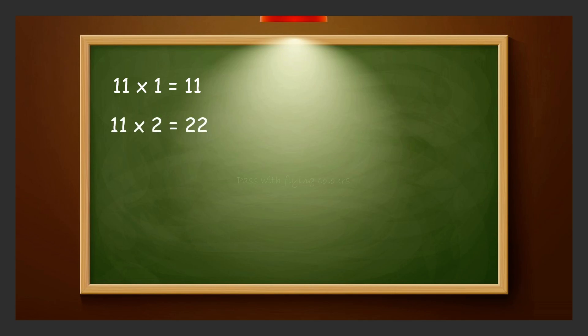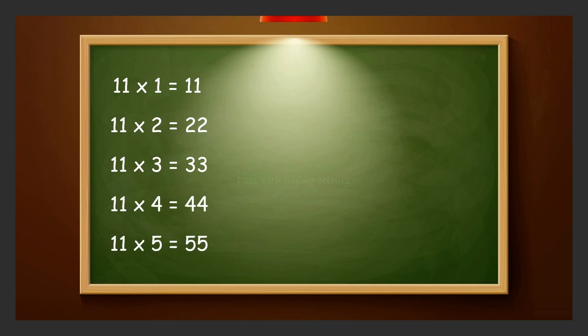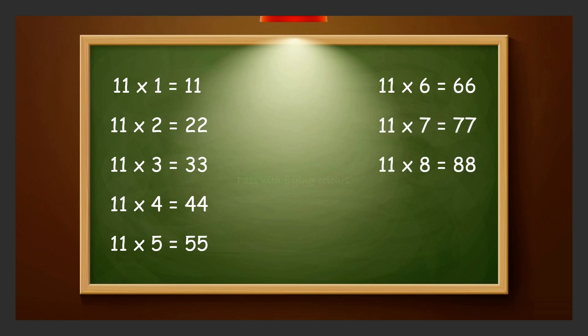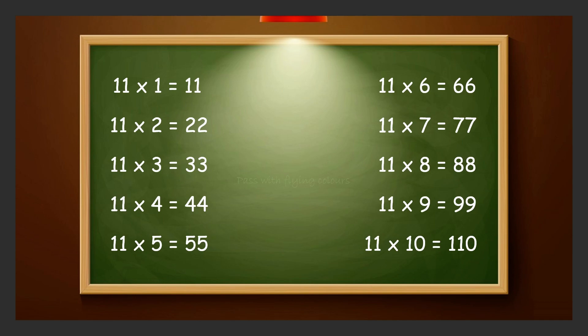Let's revise the table. 11 ones is 11, 11 twos are 22, 11 threes are 33, 11 fours are 44, 11 fives are 55, 11 sixes are 66, 11 sevens are 77, 11 eights are 88, 11 nines are 99, 11 tens are 110.